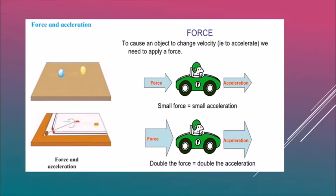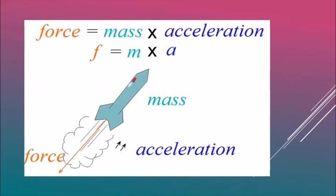This phenomenon was studied in more detail by Sir Isaac Newton, who explained more about force and acceleration and how they work together. From the examples of the carom coin and rolling marble, we understand: applying a small force gives small acceleration, and applying more force gives double the acceleration. Newton concluded that force is equal to mass multiplied by acceleration — F = ma.